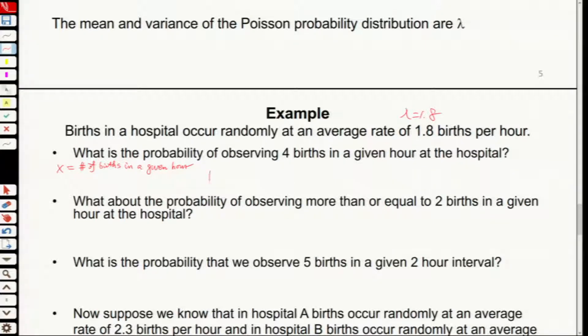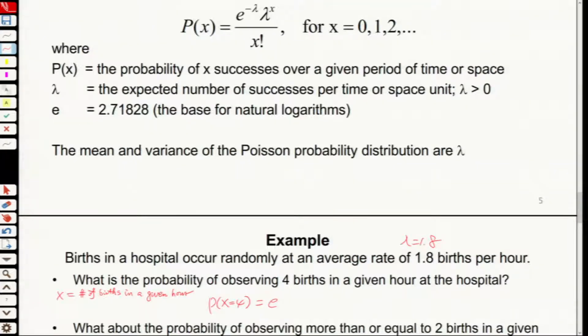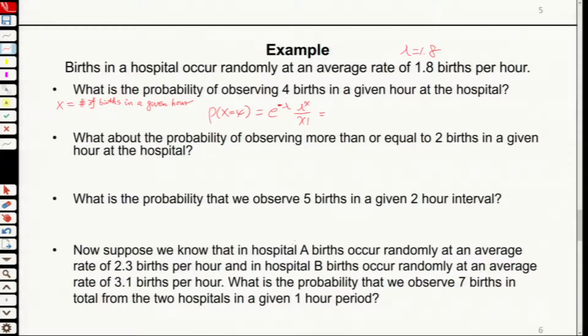So what's the probability X equals 4? Using the equation we had before, that is exponential minus lambda, lambda X over X factorial. This will equal exponential minus 1.8, and then we have 1.8 to the power 4 divided by 4 factorial. In this way we'll be able to get the probability.